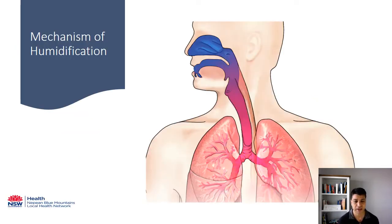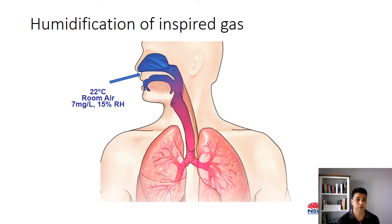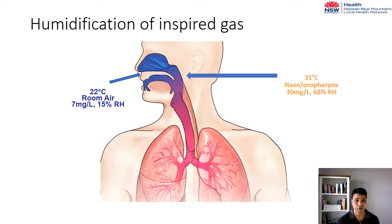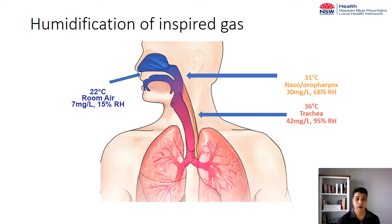Let's have a look at the mechanism of humidification in our respiratory system. The upper respiratory tract is designed to provide adequate humidification for optimal functioning of our lungs. For example, when we breathe room air which is around 22 degrees, the humidity content is around 15% only. But as the air reaches the back of the nose, it's about 31 degrees and the relative humidity is 68%, so it rises quite rapidly. As soon as the air reaches the trachea, the temperature rises to 36 degrees, and with that rise the humidity also increases to about 95%.